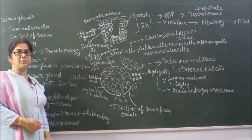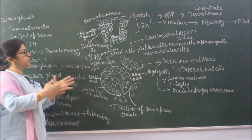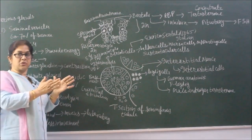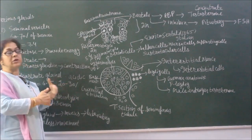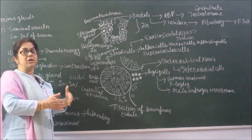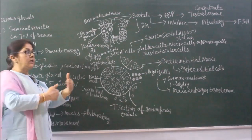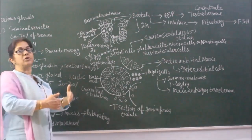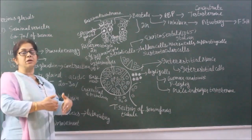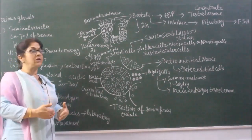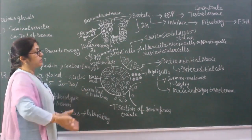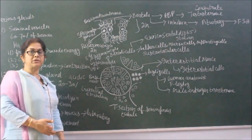Besides providing nutrition, Sertoli cells also produce important substances such as androgen binding protein, which concentrates testosterone — the male androgen — and increases its amount. Additionally, Sertoli cells produce inhibin, a substance that acts on the pituitary gland to stop the synthesis of follicle stimulating hormone (FSH) via a feedback mechanism, thereby regulating further sperm maturation. This concludes the male reproductive system; next we will move to the female reproductive system.